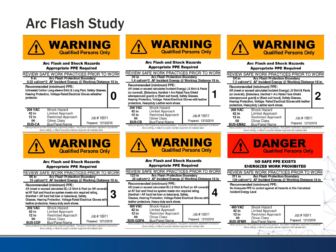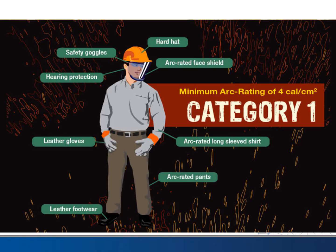Let's look a little closer at the categories. Category one is up to four calories per centimeter squared — it's not a whole lot more than what a normal electrician might wear. You need leather gloves, an arc-rated face shield, hard hat, safety goggles, hearing protection, and arc-rated pants and long-sleeve shirts. The concern with certain fabrics like polyester is that if you were to get burned, that material actually melts into your skin — whereas cotton just burns. Category one is pretty minimal impact overall.